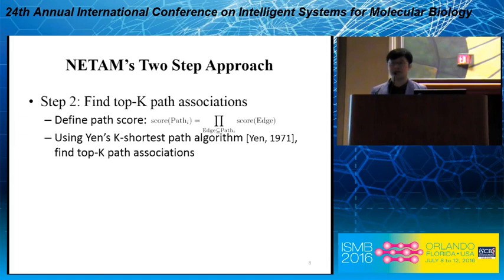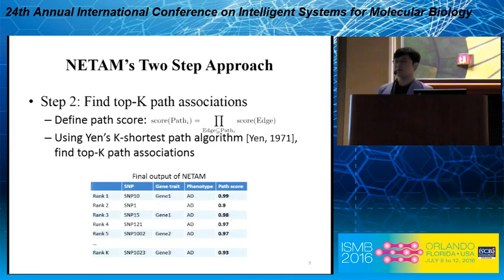After running NITAM, the final results look like this. We have a list of path associations with an assigned path score. Sometimes the path association includes SNPs, gene expression traits, and phenotypes, but sometimes it can also be just SNPs and phenotypes.